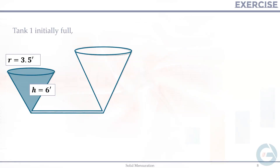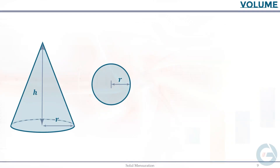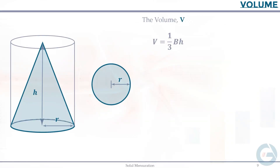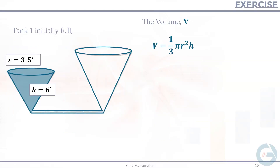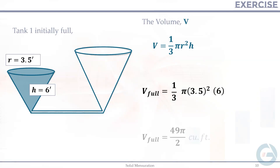Initially, the first tank is full of water. We calculate its volume using the cone formula V = (1/3)πR²h. Plugging in the values — radius 3.5 feet and height 6 feet — the volume of the first tank is (1/3)π(3.5²)(6) = 49π/2 cubic feet.